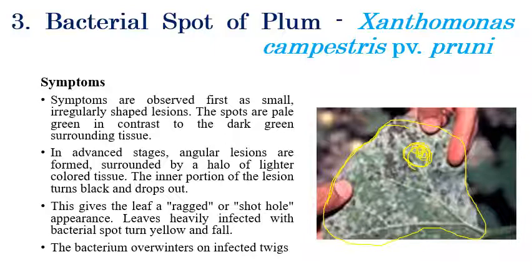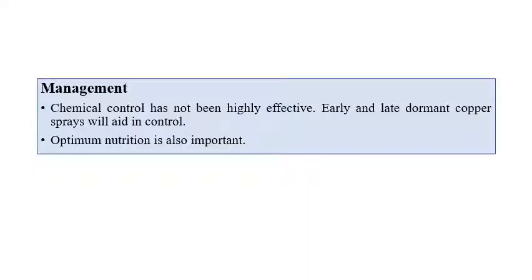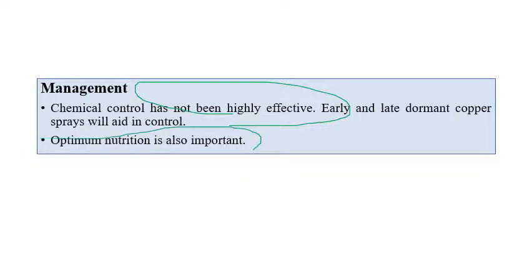A ragged or shot-hole appearance can also be observed on the leaves. The bacteria can survive winter in infected twigs. In later stages, wilting and drooping of leaves can be observed. For management, chemical control is not very effective for this disease. Giving optimum nutrition is very important, along with spraying a small amount of copper-based sprays, which give some level of control.